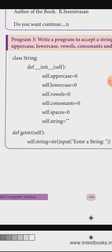We define class String. The class name is String. Inside the class, we use the def keyword and init, which is the constructor function, taking self and arguments. The constructor function initializes the class object.